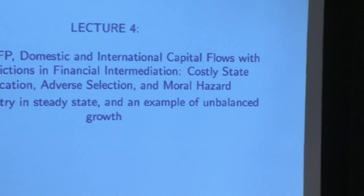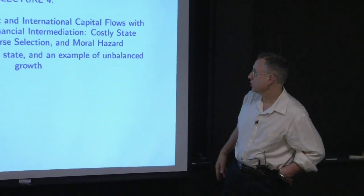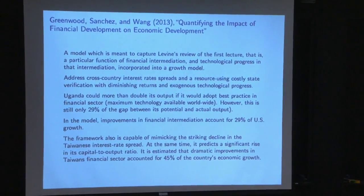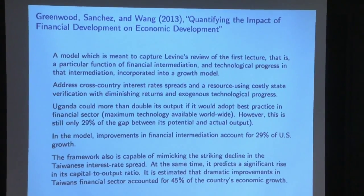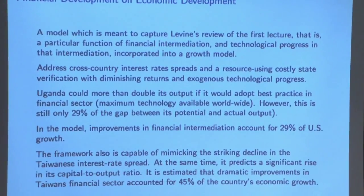The irony for those coming from the advanced macro class is that Alp was featuring costly state verification early in a lecture. These things are related in the sense that the dynamics created with debt contracts have to do with what you assume about the information structure as well as adverse selection. You'll be relieved to know there isn't as much material on the front end of this lecture as last time. Almost everybody assumes limited commitment, so there really wasn't much to choose from.